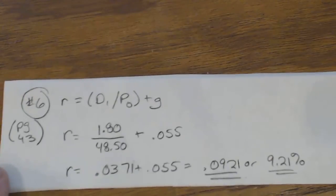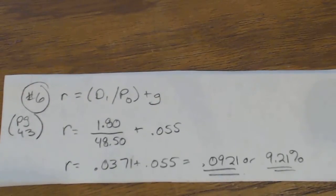But now what we're going to do is there's a formula on page 43 that allows you to solve for R when you've got all the other numbers like P and D and G. So in this case, R equals D1 over P0, and remember that is also dividend yield, plus G, which is the growth.